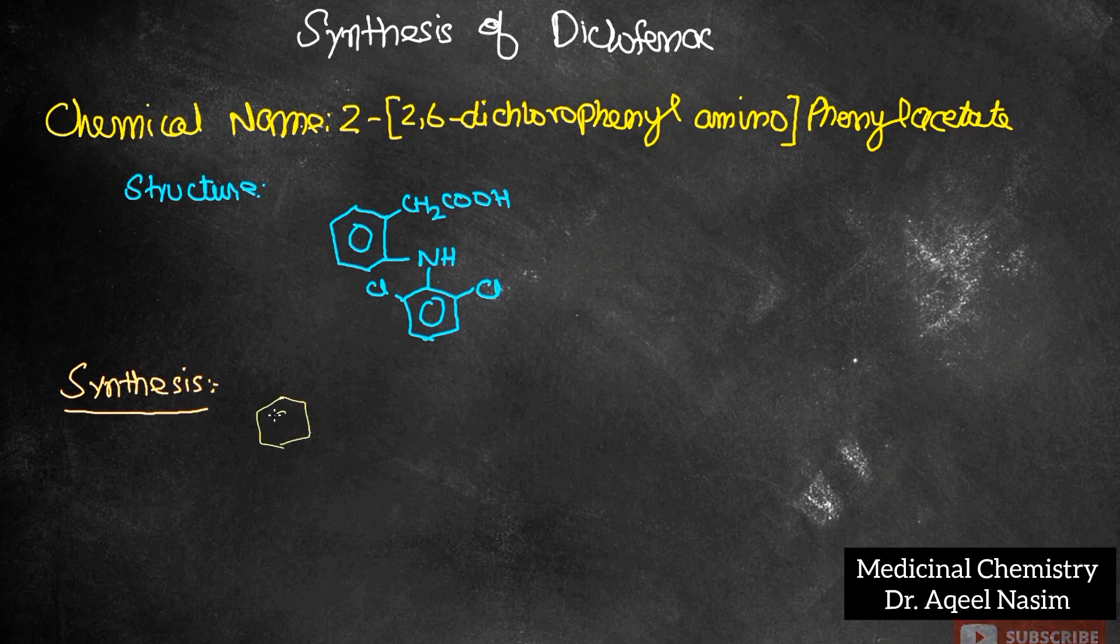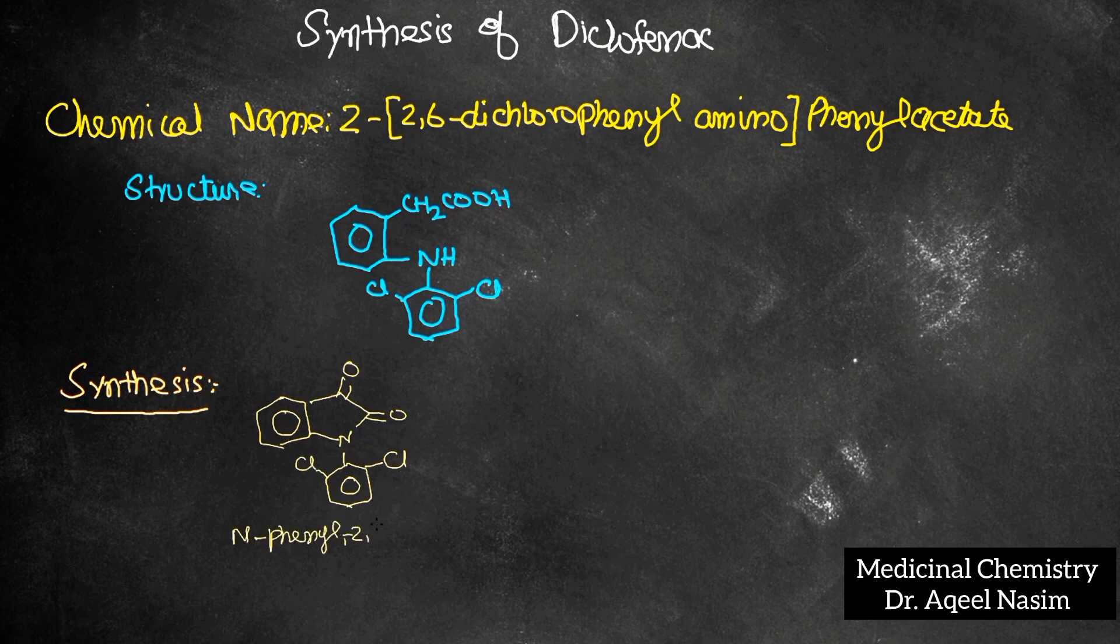Let's discuss the synthesis step by step. The first step is N-phenyl 2,6-dichloroaniline undergoes Wolf-Kishner reduction.